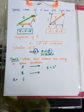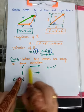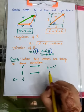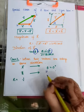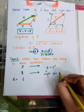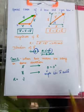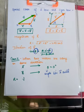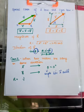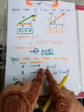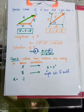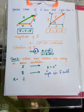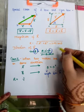Special case number one: when two vectors are acting in the same direction, vector a and vector b both acting in the same direction, then θ = 0° because the angle between vector a and vector b is 0°. They are sharing an angle of 0 degrees with each other. Let me now carry out further investigations to find the resultant magnitude and direction by putting values into the standard results.